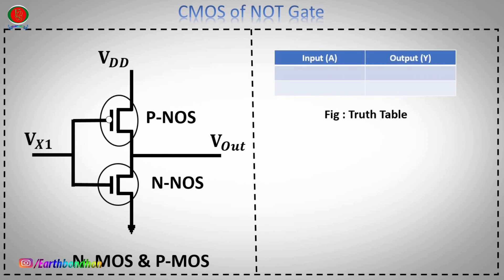NOT gate truth table and symbol: NOT gate input A equals 0, NOT gate output Y equals 1.